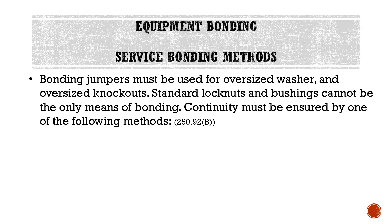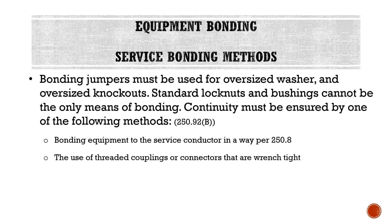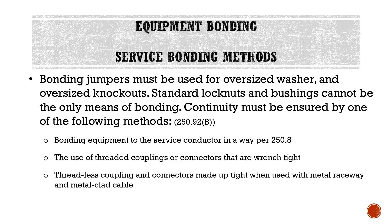Bonding jumpers must be used for oversized washers and oversized knockouts. Standard lock nuts and bushings cannot be the only means of bonding — continuity must be ensured by one of the following means per 250.92B: bonding equipment to the service conductor per 250.8, use of threaded couplings or connectors that are wrenched tight, and threadless couplings and connectors made up tight when used with metal raceway and metal-clad cable, or other listed means.